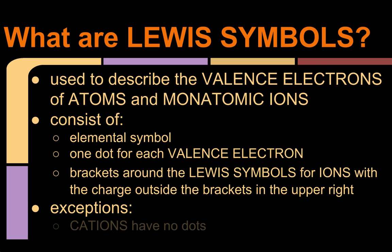And there is one exception to this rule: cations don't actually have any of those dots. So I said one dot for each valence electron, there's no dots with cations, but again I'm going to show you an example of that to help that make more sense.